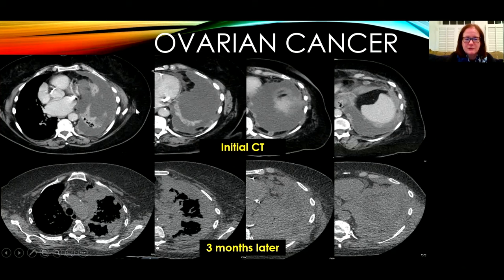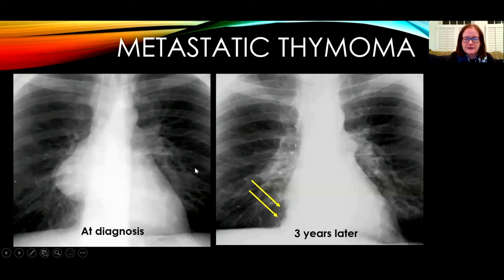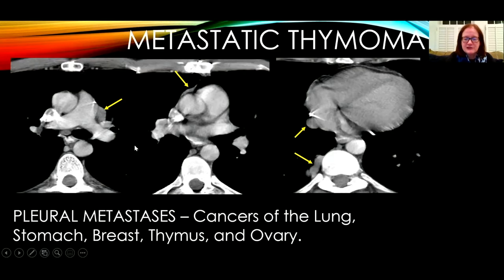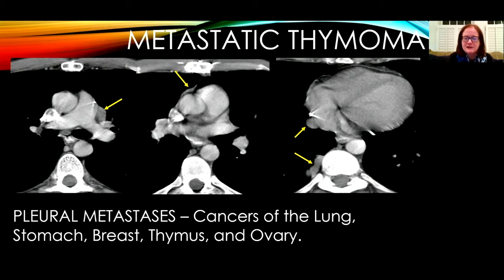The initial CT with contrast shows nodular implants along the left pleura with a large left pleural effusion. Three months later on non-contrast CT, there is progression of pleural thickening extending over the mediastinal aspect and into the fissures. A patient with metastatic thymoma shows the original thymic lesion, and a chest radiograph three years later shows recurrence with extraparenchymal or pleural implants. CT with contrast shows pleural implants bilaterally causing extraparenchymal masses making obtuse angles with the chest wall and involving the pleural interface. Pleural metastases most commonly result from cancers of the lung, stomach, breast, and thymus.